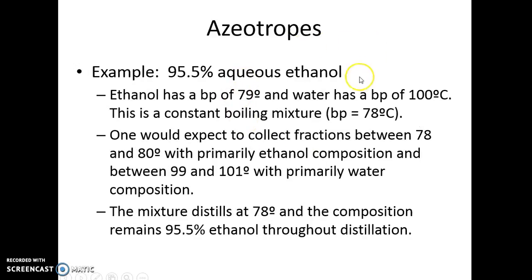An example is 95.5% aqueous ethanol. This is very easy and cheap to purchase because when you distill ethanol, if there's any water present at all, what you distill over is 95.5% ethanol. Ethanol has a boiling point of 79 and water a boiling point of 100, and what you have is a constant boiling mixture that goes over at 78 degrees until either the ethanol or the water runs out.